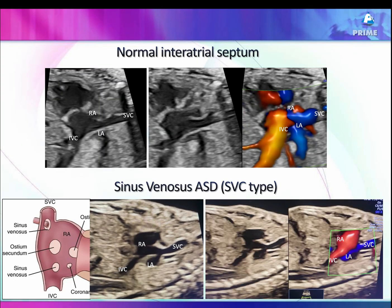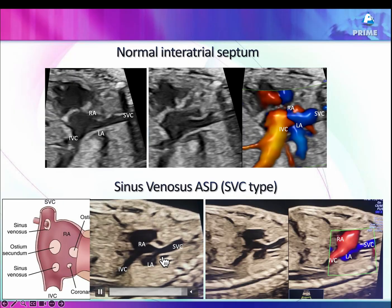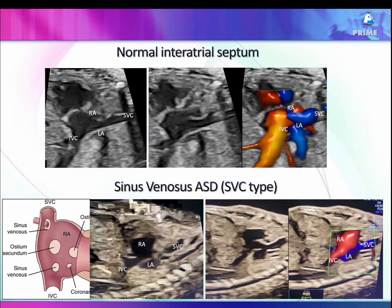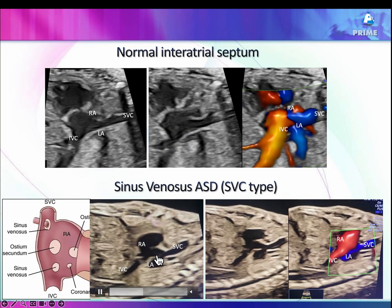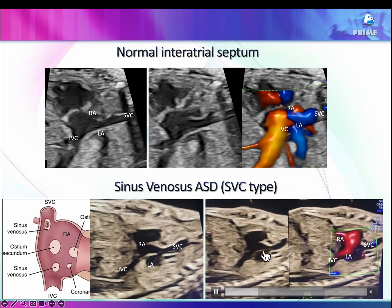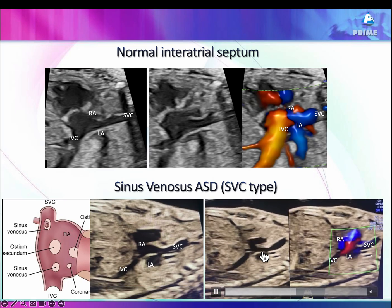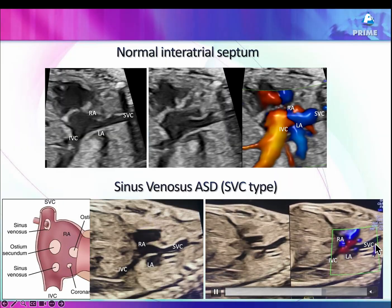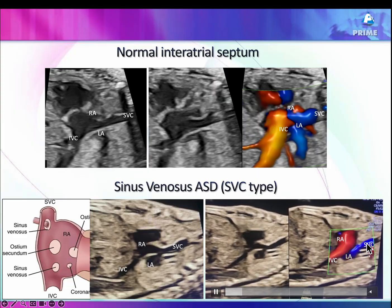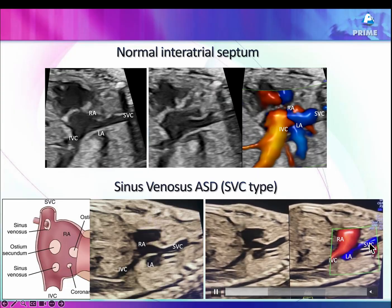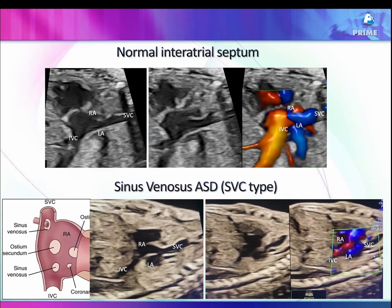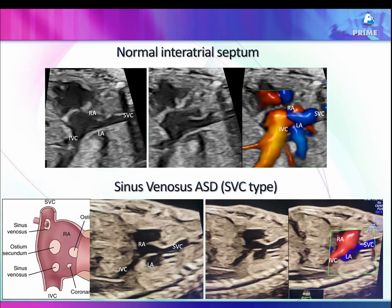In the sinus venosus type of ASD, the SVC appears to override the inter-atrial septum. Where you see the superior vena cava overriding the inter-atrial septum — that is where the sinus venosus ASD is. You see flow on both sides, in the LA as well as RA, coming from this overriding SVC. This is the sinus venosus ASD, which is a pretty uncommon ASD to see in the fetal circulation.